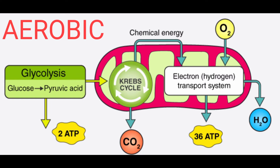Aerobic respiration consists of two stages: glycolysis and the Krebs cycle. The conversion of glucose into pyruvate or pyruvic acid is called glycolysis. It occurs in the cytoplasm. The Krebs cycle is the process of converting pyruvate into carbon dioxide and water along with the release of a considerable amount of energy. It occurs in the mitochondria. One molecule of glucose liberates 38 ATP of energy during aerobic respiration. The energy from ATP is used for various cell functions.